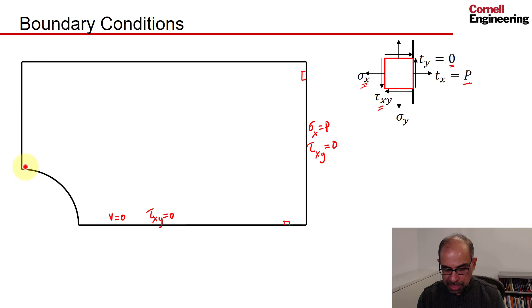Now, this is also a symmetry boundary which can move only in the y direction. So I have a displacement boundary condition, u equal to zero. And similarly, tau xy is equal to zero.